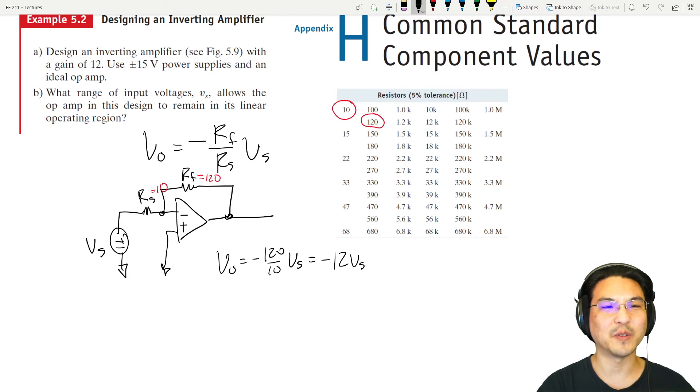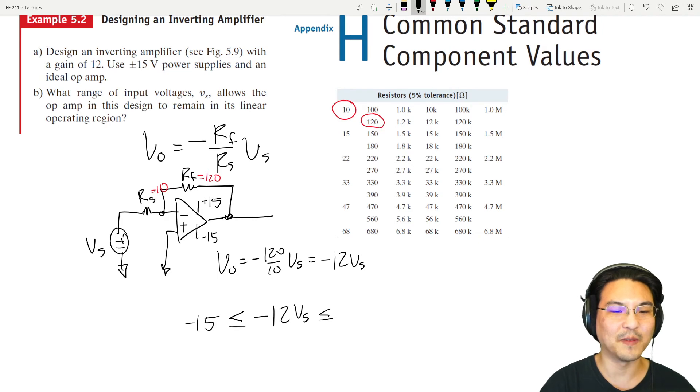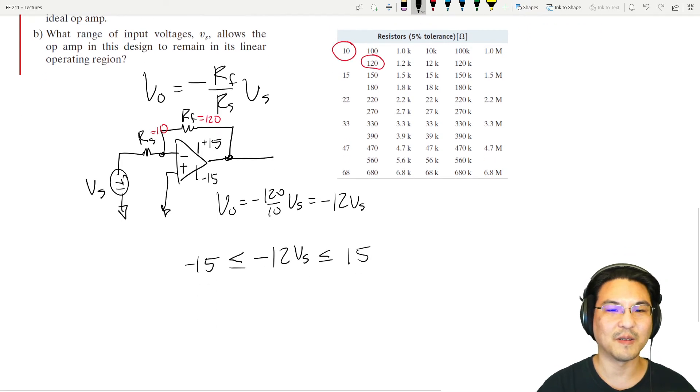What range of input voltages allows it to remain in its linear region? In other words, it doesn't get saturated, because it's going to be limited to plus or minus 15. So negative 12 VS output is limited to plus or minus 15. On the input side, let's just divide everything by negative 12. Be careful when you divide by a negative—the inequalities flip over.